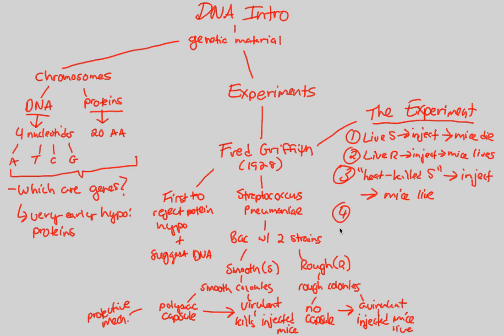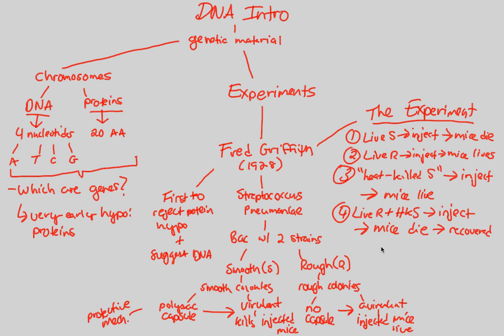In step four, Griffith combined live R — which we know is avirulent and safe — with heat-killed S, and injected this novel combination into mice. What he observed was remarkable: the mice died. Even more incredible, he was able to recover live S cells from the dead mouse. So somehow, combining dead S cells with live R cells resulted in a dead mouse and living S cells.